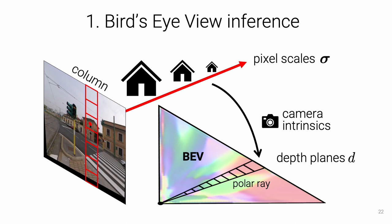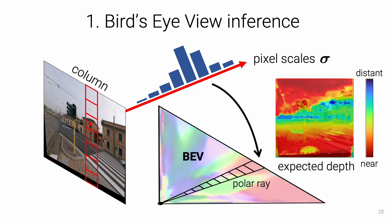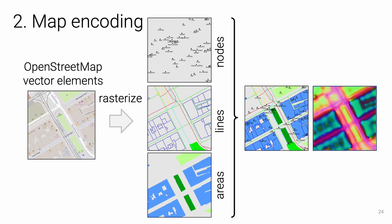This helps generalizing to arbitrary cameras. By predicting a distribution over scales, our network learns to infer monocular depth from pose supervision only. Object classes in OpenStreetMap belong to three categories: nodes, lines, and areas. We select the 50 most frequent classes, rasterize each category, and combine them into a high-dimensional neural map.